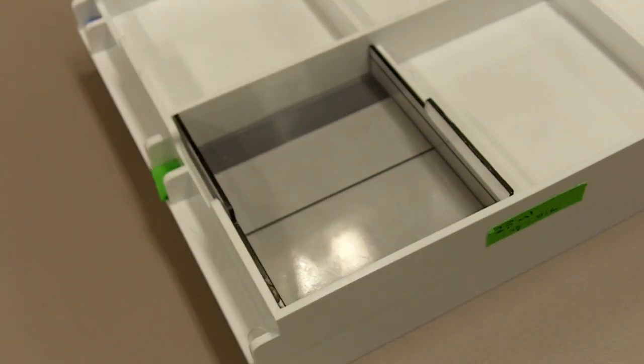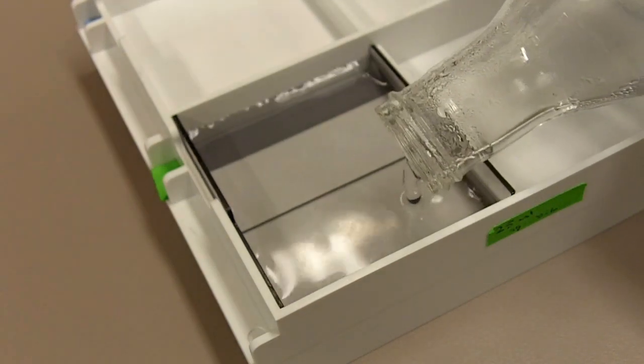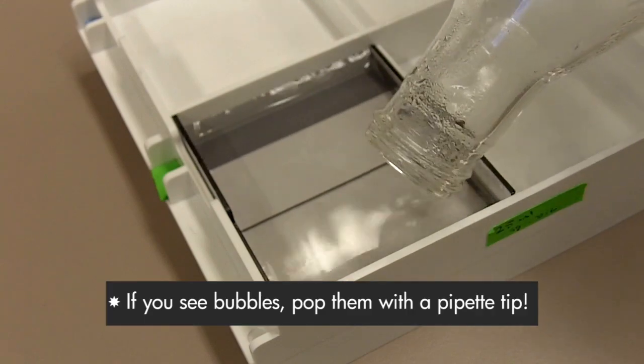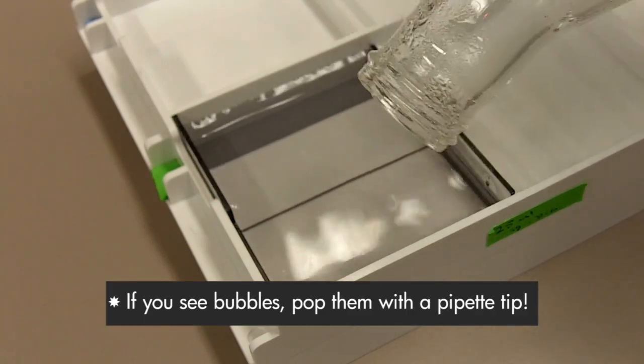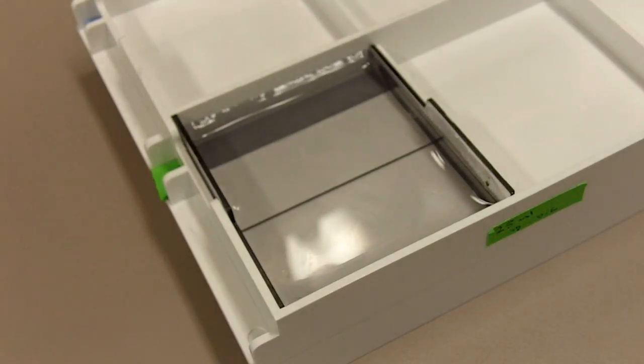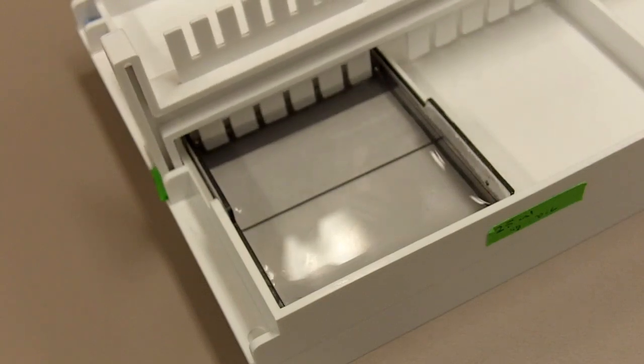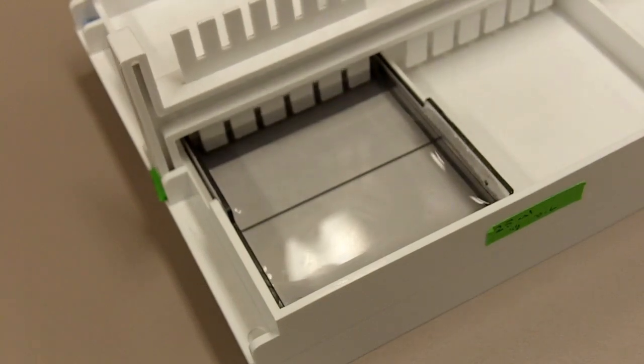After your agarose has cooled down we can pour the gel. Here's the casting tray for the agarose gel. Now what we need to do is slowly pour in the agarose so we don't introduce any bubbles. Make sure there are no bubbles and then we can put in the comb, like that and then we just have to wait until the gel solidifies.